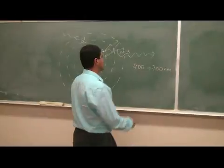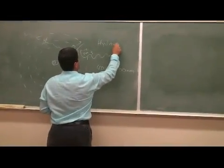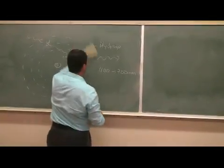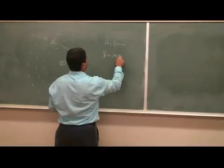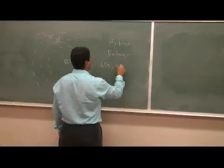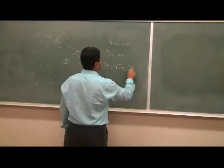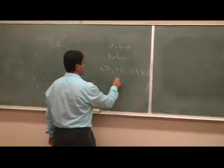So we learned in the atomic theory that hydrogen gives particularly four lines known as the Balmer lines, 656 nanometers, 486, 434, and 410 nanometers.